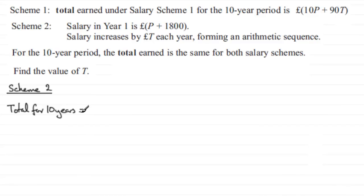What's it going to equal? The first term is P plus 1800. Then it goes up by T pounds each year, so the next year it's P plus 1800 plus T. In the following year, it's P plus 1800 plus 2T, and so on.